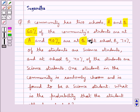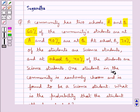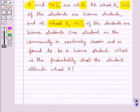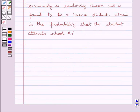At school A, 70% of the students are science students, and at school B, 40% of the students are science students. One student in the community is randomly chosen and is found to be a science student. What is the probability that the student attends school A?